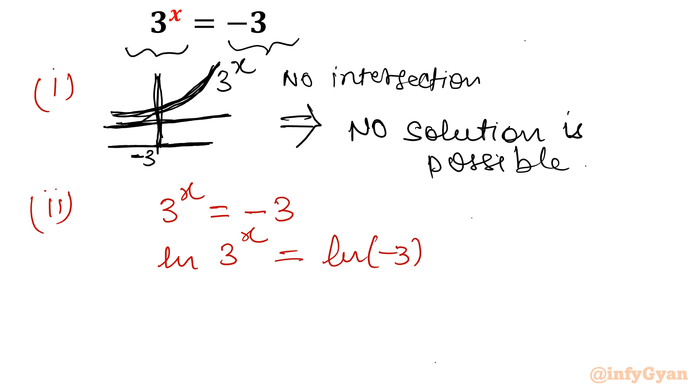So left hand side we will apply the rule of logarithmic property: x ln 3 there would be. And right hand side, we have not taken ln of negative number. Logarithm of negative number - why? It is undefined, not defined. It is not defined because we are thinking about real solution. So here it is not defined. So you will write no real solution is possible.